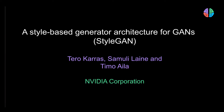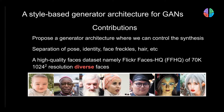In this video, let's have a look at StyleGAN, which is a style-based generator architecture for generative adversarial networks. We all know that GANs are composed of a generator and a discriminator. The contribution of this paper is in the generator architecture. They propose an architecture where you can precisely control the synthesis of the image generated — separating pose, identity, face, hair, and color — like sliders in a UI.